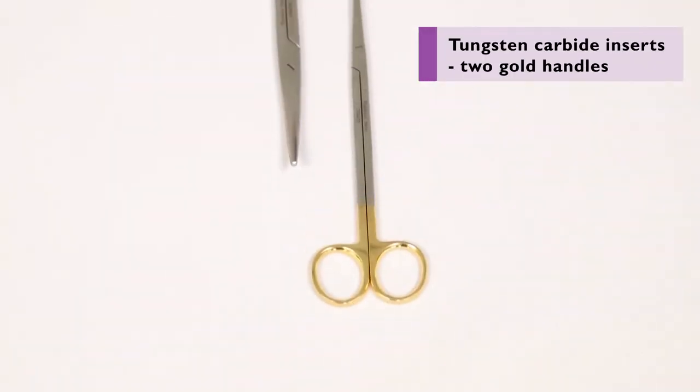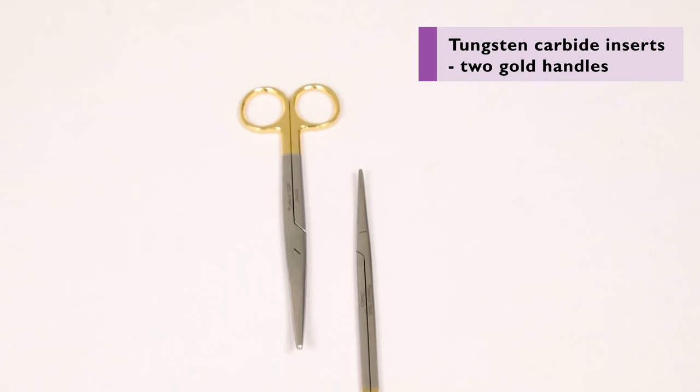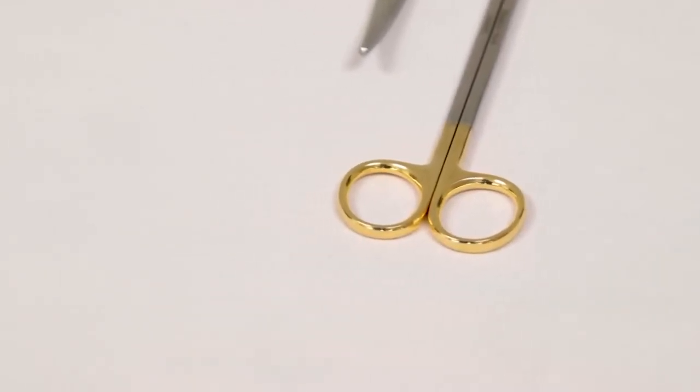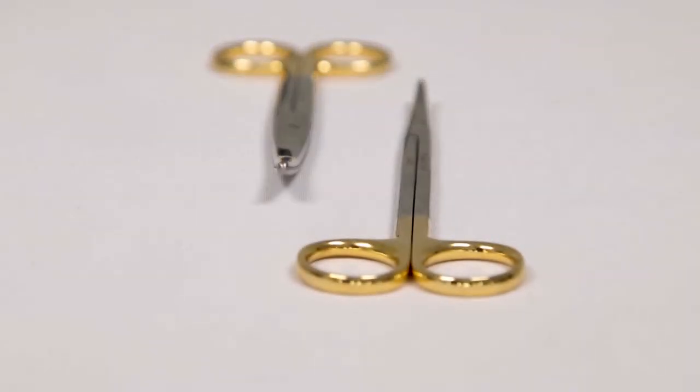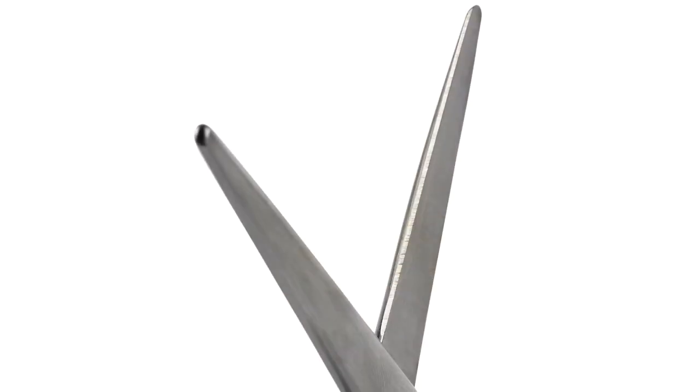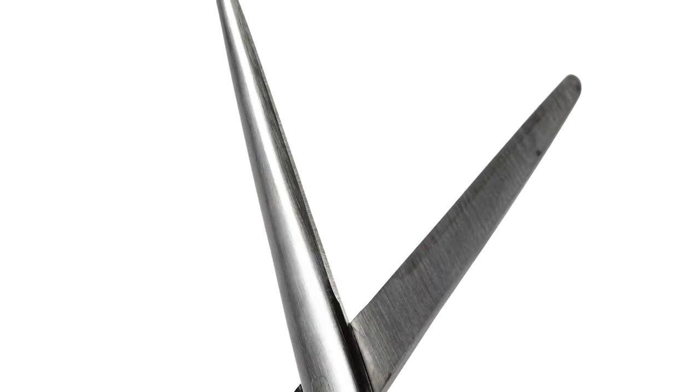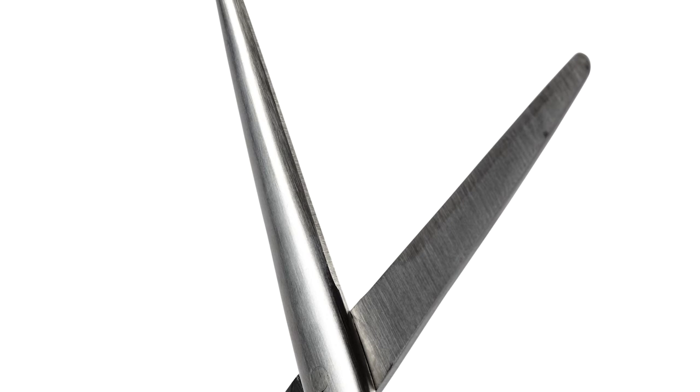Two gold handles indicate tungsten carbide blade inserts. Tungsten carbide is a strong, hard-wearing material, considered a superior choice by many surgeons. The inserts are designed to enhance the working life of the scissors and may lengthen the time required between sharpening.